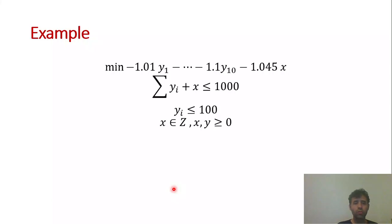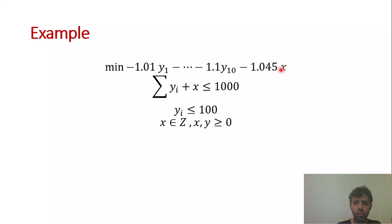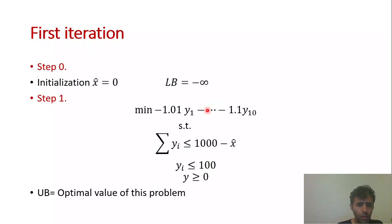Now I'll demonstrate with an easy example, going through two iterations of the Benders Decomposition algorithm. In this problem we have one integer variable x and ten real variables. There is one first constraint and ten remaining constraints. In the first iteration, we initialize x-hat to zero and set the lower bound to minus infinity.